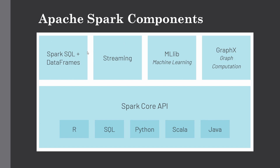The first sub-component is Spark SQL, which deals with DataFrames and structured data. It enables us to run SQL queries on top of Spark, allowing us to process both structured and semi-structured data. It also provides the capability to work with Hive and gives us the advantage of up to 100 times faster execution than MapReduce. Running Hive queries on top of Spark is far more efficient than converting HiveQL queries to MapReduce.